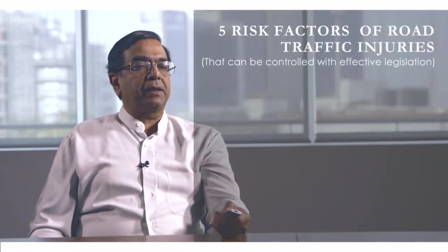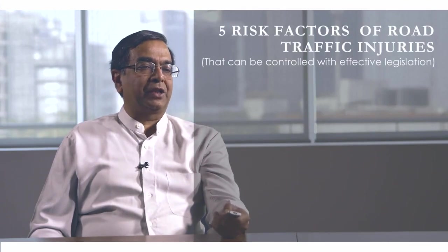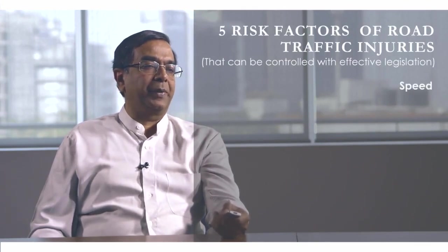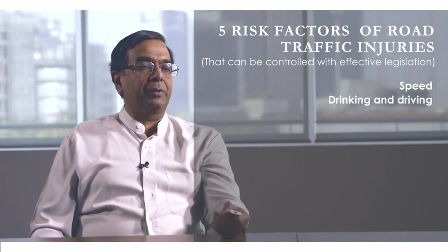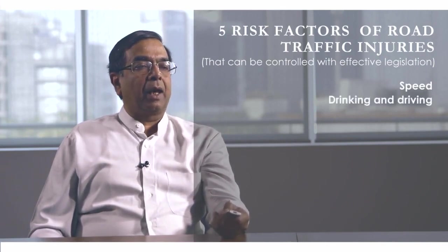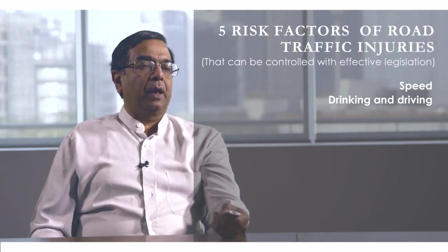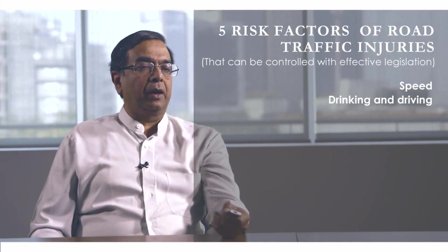There are five factors that can be controlled through effective legislation. Speed of vehicles can be controlled by speed laws. Drinking and driving has to be strictly curbed, and testing alcohol content in the breath and blood of drivers suspected of driving under the influence of alcohol is a very important measure.